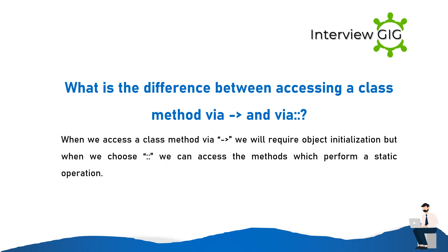What is the difference between accessing a class method via -> and via ::? When we access a class method via ->, we require object initialization. When we use ::, we can access methods that perform a static operation.